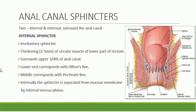The anal canal has two sphincters: the internal sphincter and the external sphincter. The internal sphincter is an involuntary muscle formed by thickening of the circular muscle of the lower part of the rectum, which continues below as the internal sphincter. It surrounds about three-fourths of the upper part of the anal canal. Its lower end corresponds with Hilton's line, which marks the inter-sphincteric plane.